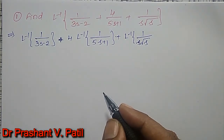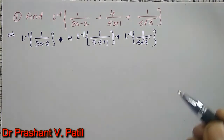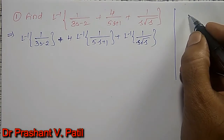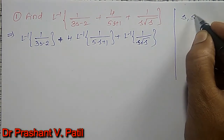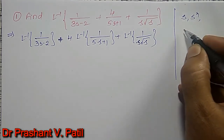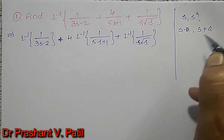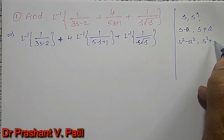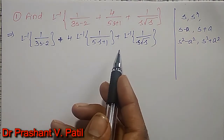All three terms are not in the standard forms. Our standard forms require the denominator to be in the form of either S, S^n, S minus A, S plus A, S squared minus A squared, or S squared plus A squared. Then we can easily find the inverse Laplace transform, but they are not currently in the standard forms.